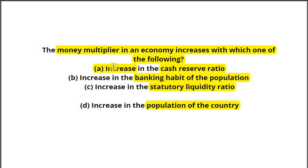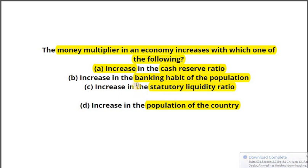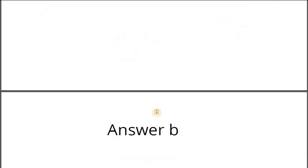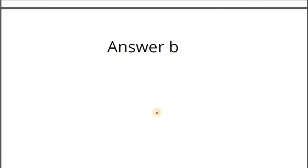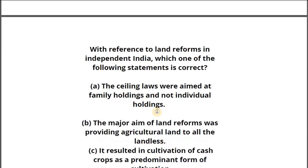We haven't gone into the technical details of money multiplier — numerator and denominator — but based on pure common sense, if more and more people are going to the bank, money is something that will be doubled or tripled. So the answer is B. Do let me know if this is enough or we should go into technical details, although I believe that is not needed given the volume of content to cover. Let's get on to the next question.